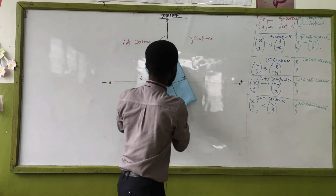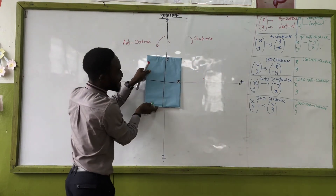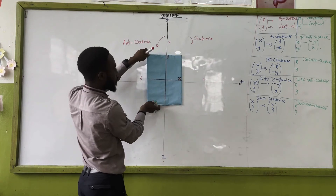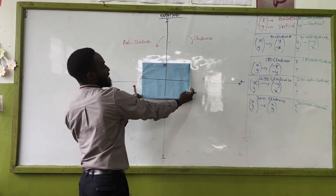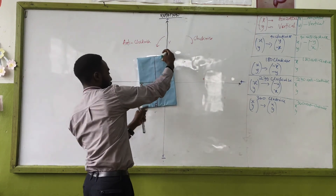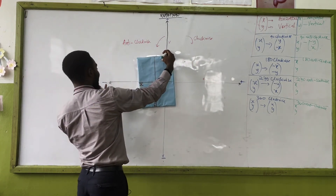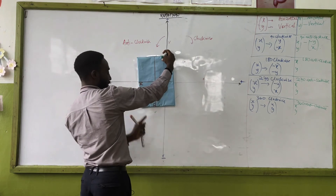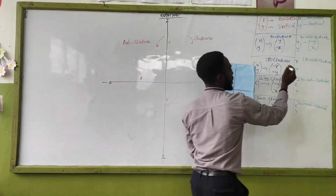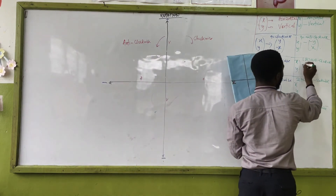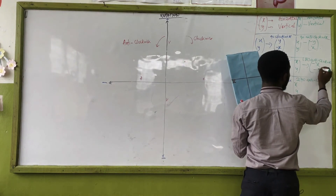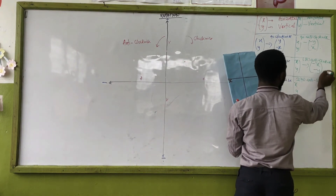For 180° anti-clockwise, we move it two times — 90 then 180. The horizontal becomes negative x and the vertical becomes negative y. So 180° anti-clockwise: (x, y) → (-x, -y).